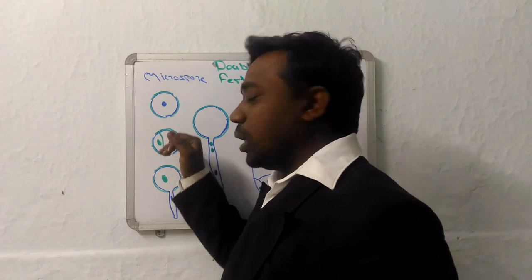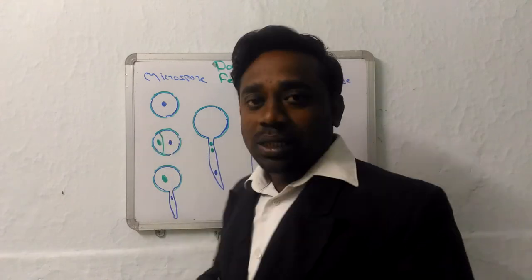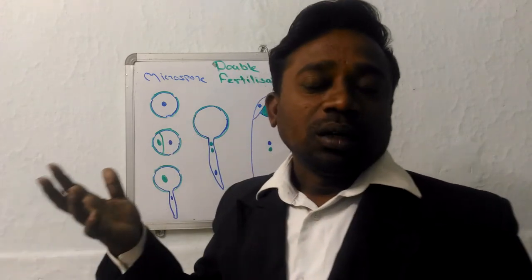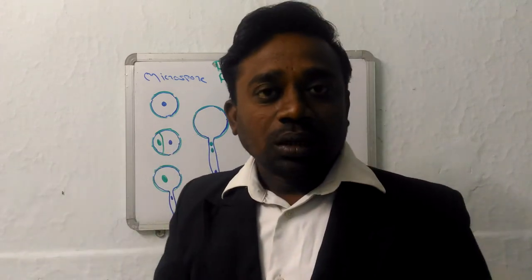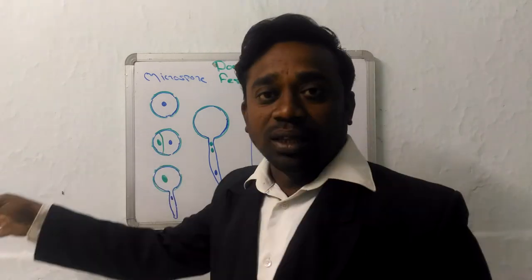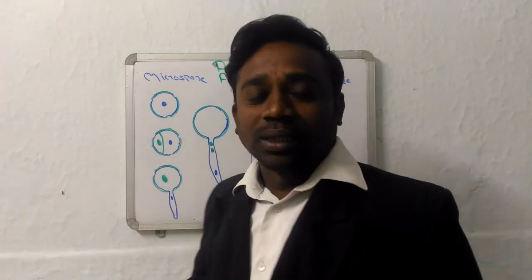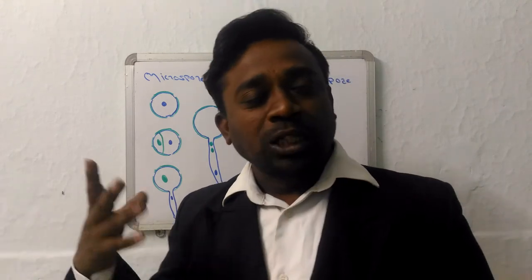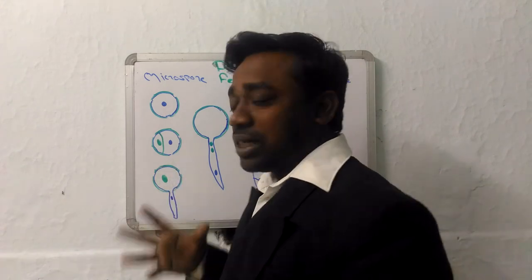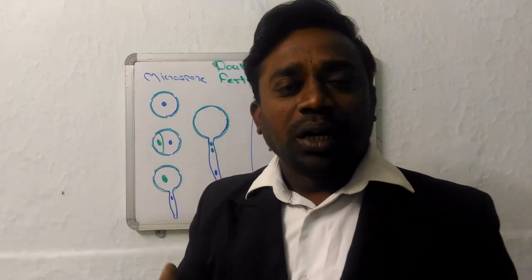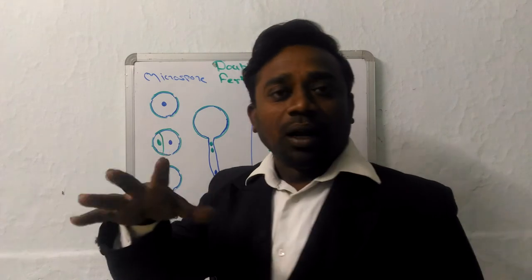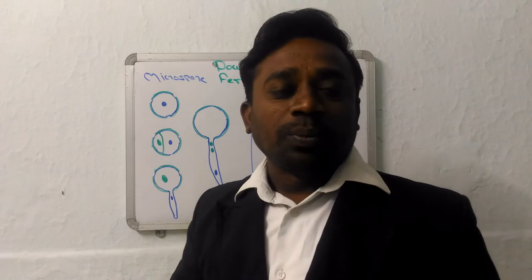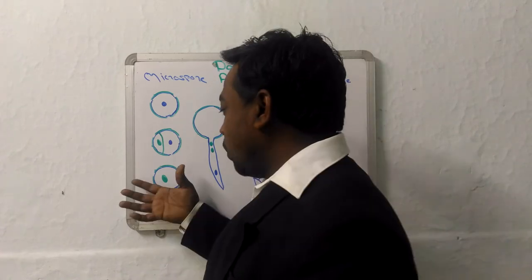Large one is tube and smaller one is generative. Now tube cell is larger because it has nutrients, it has vacuoles, which are lacking in generative. That's why it is small in size. Now in most of the angiosperms, pollen grains are shed out at this stage only, in two-cell condition. Pollination will take place. After pollination, pollen grains will land on suitable receptive stigma. With the help of sugary secretions of the stigma, pollen grains will germinate.